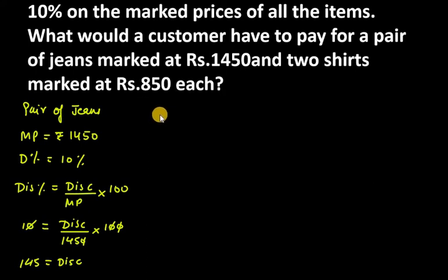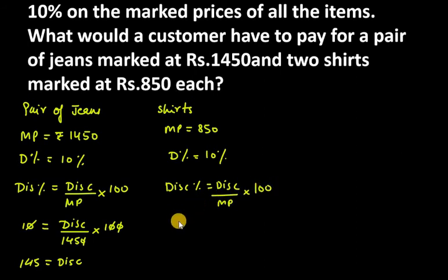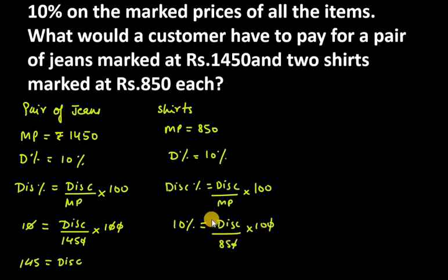Now for the shirt — the marked price is 850 each, and the discount percentage is 10%. Using the same formula, Discount% = (Discount / MP) × 100, we get 10 = Discount / 850 × 100. Cancelling zeros, the discount on one shirt comes out to be rupees 85.